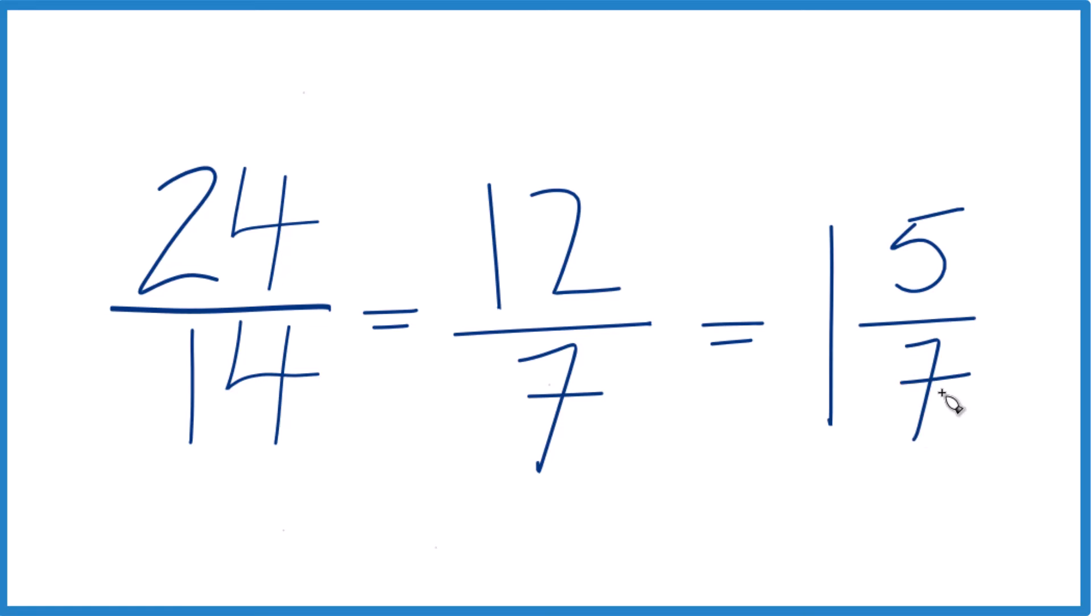You can check it, too, because 1 times 7 is 7, 7 plus 5, that gives us 12. Keep the 7 the same.